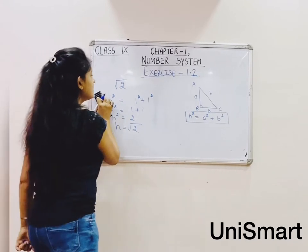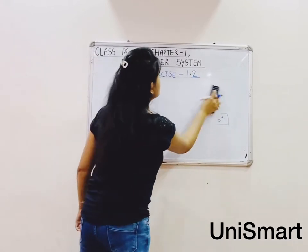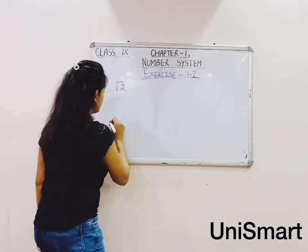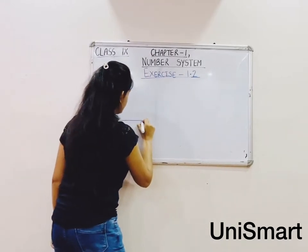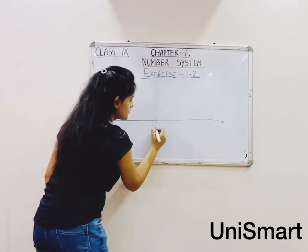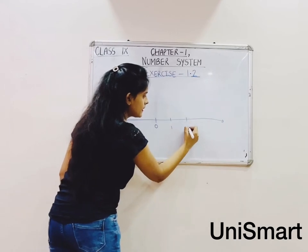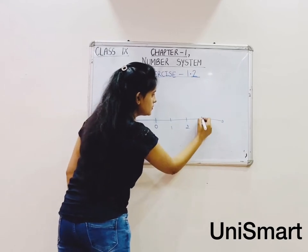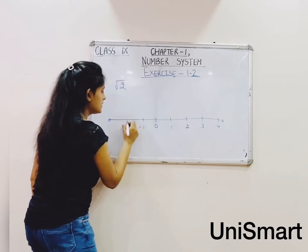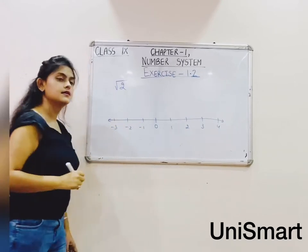Now we will create our number line with points: 0, 1, 2, 3, 4, minus 1, minus 2, minus 3.